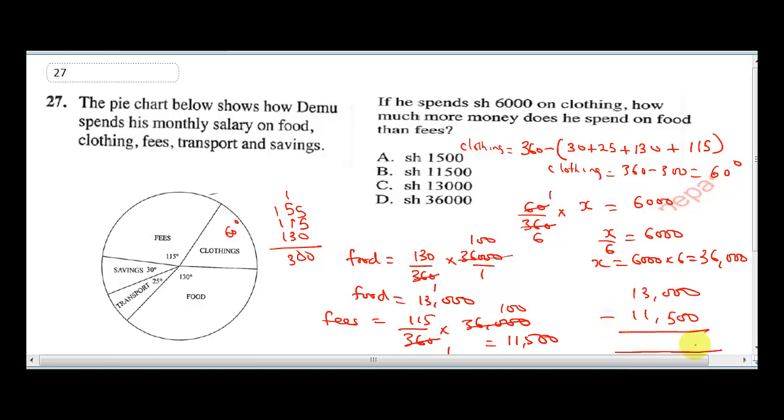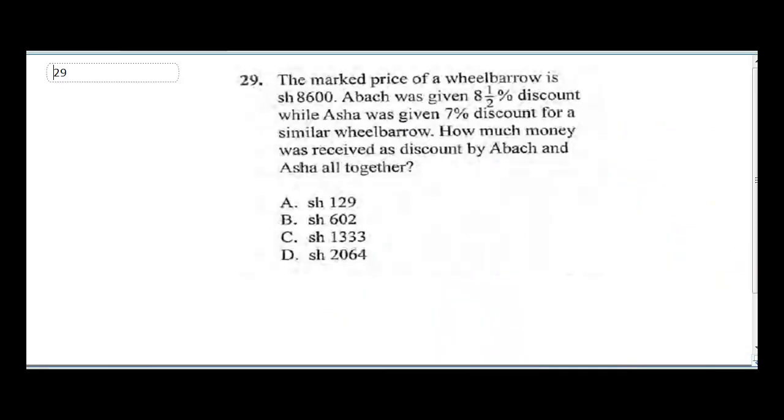They said how much does he spend more, so we'll do 13,000 minus 11,500, and that will give us our final answer. So 10 minus 5 will be 5, 2 minus 1 will be 1, and 1 minus 1 will be 0. So he will spend 1500 more. That's our final answer.